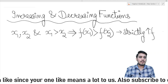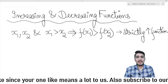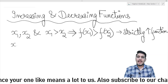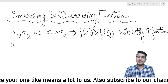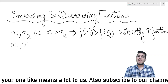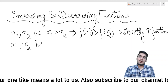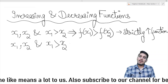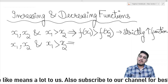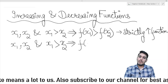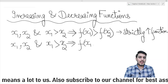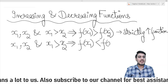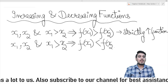Similarly, if I have a function with x1 and x2, and x1 is bigger than x2, but f(x1) is bigger than f(x2), then this is a strictly increasing function. On the other hand, if x1 is bigger than x2 but f(x1) is less than f(x2), then it is a strictly decreasing function.